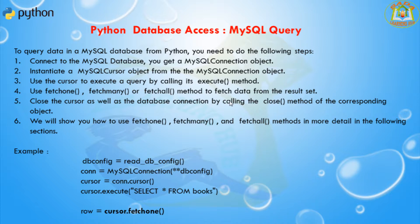To query data in the MySQL database from Python you need to do some steps. First, connect to the MySQL database to get a MySQL connection object. Next, instantiate the MySQL cursor object from the connection object. After that, use the cursor to execute the query by calling its execute method. Then use fetchone, fetchmany, or fetchall to fetch data from the result set. Finally, close the cursor and the database connection by calling the close method.